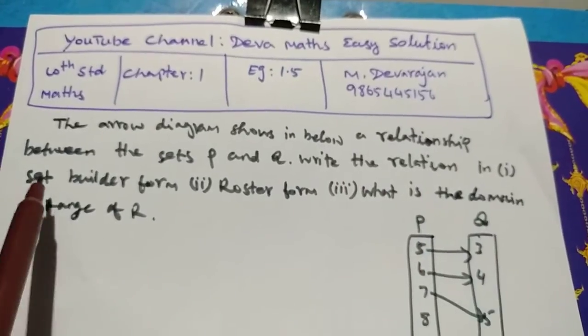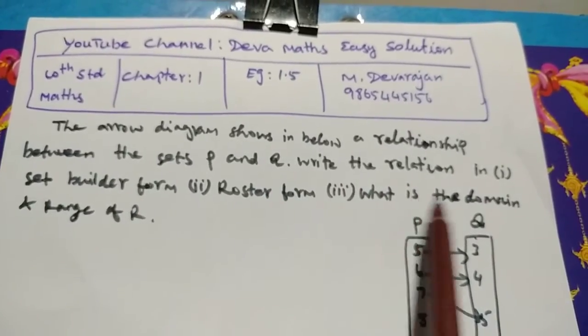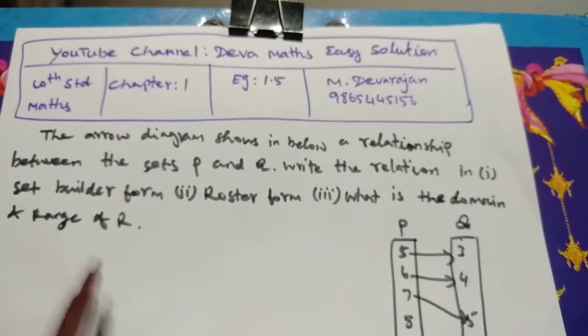Write the relation in: part one, set builder form; part two, roaster form; part three, what is the domain and range of R.